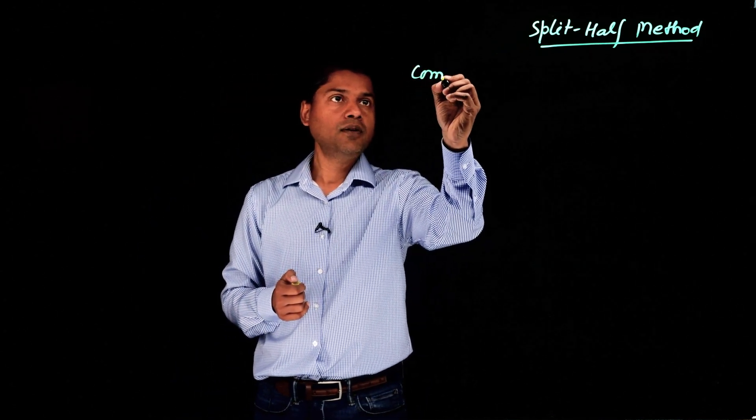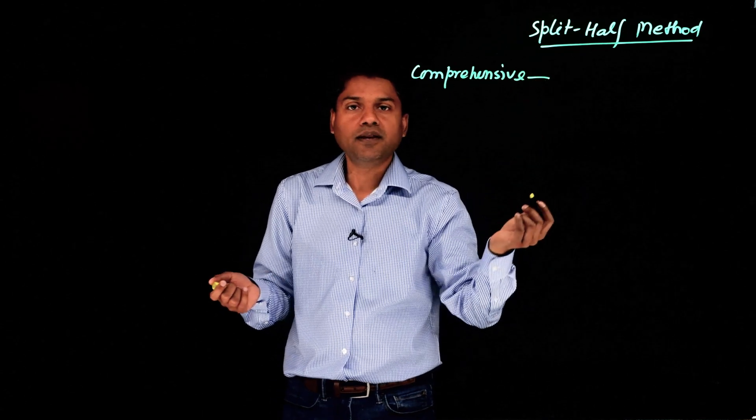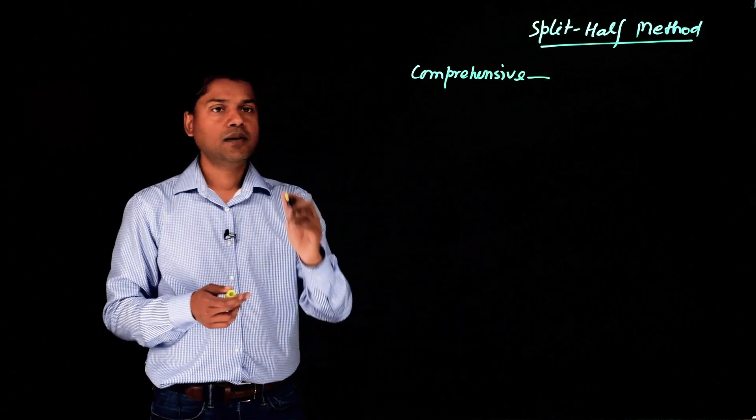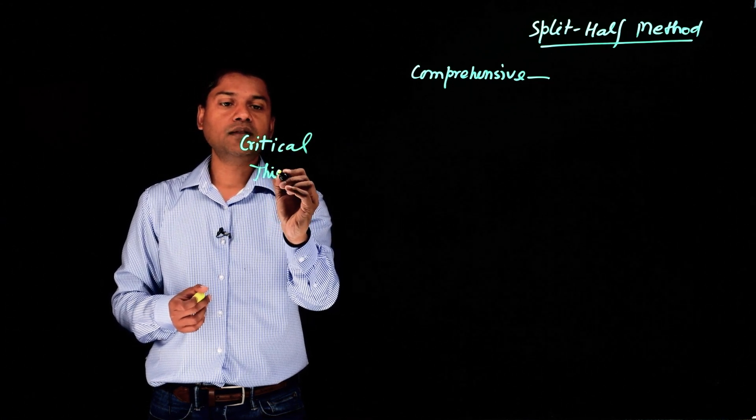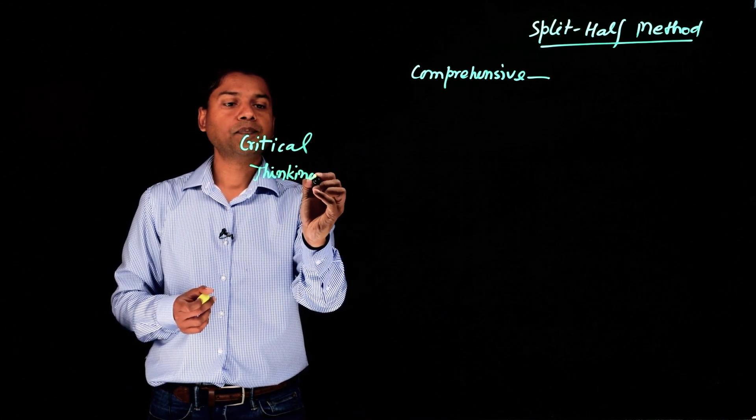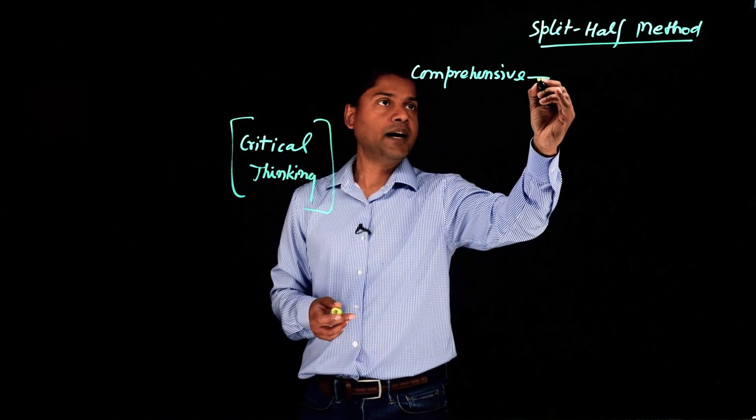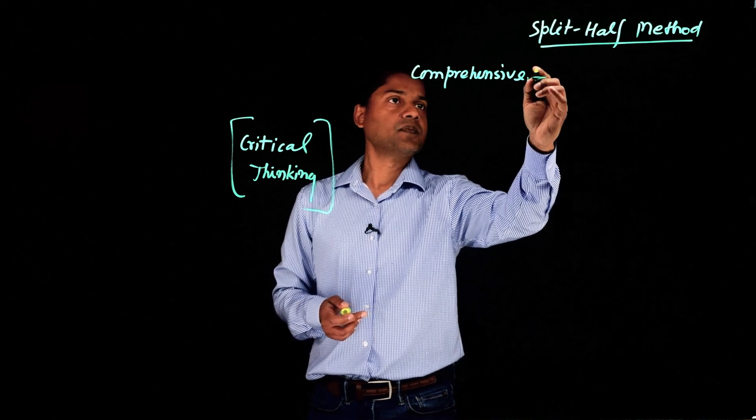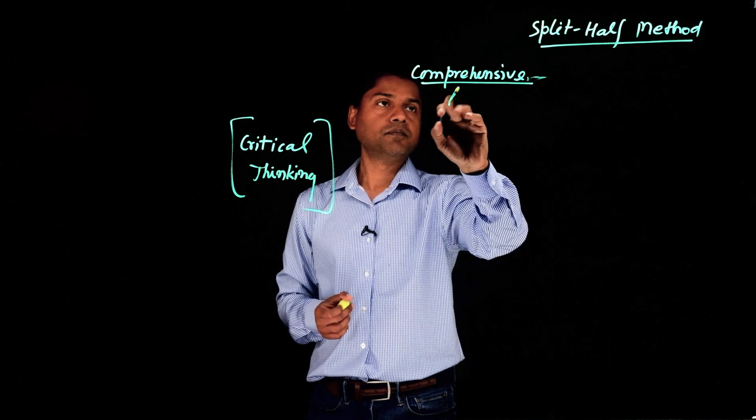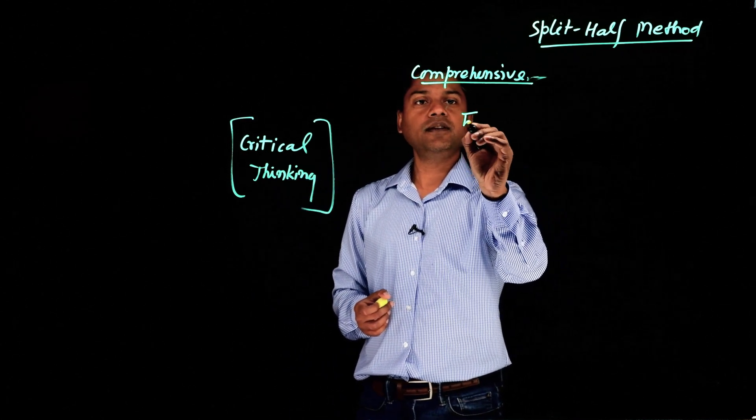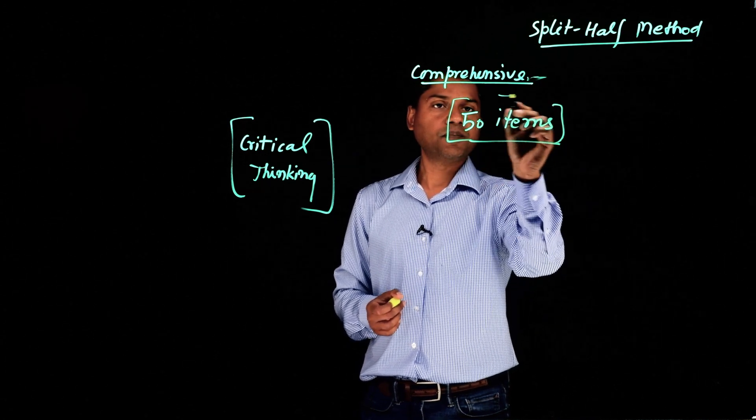So first of all, develop a comprehensive test to measure anything. It could be, let's say, I'm developing a test to measure critical thinking. So I developed comprehensive items, like a list of items. Let's say I develop 50 items on a scale to measure critical thinking.